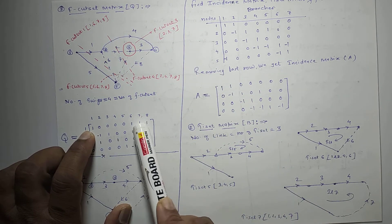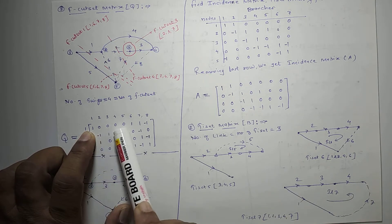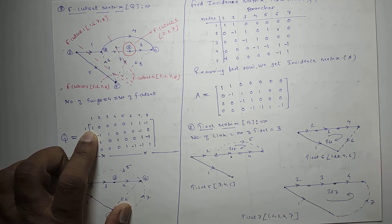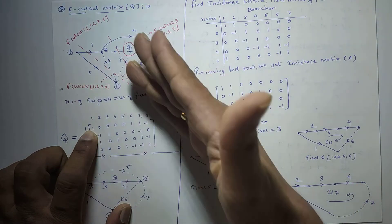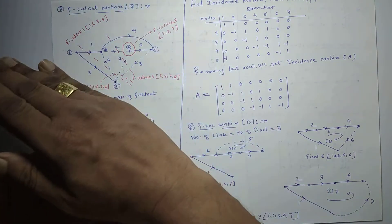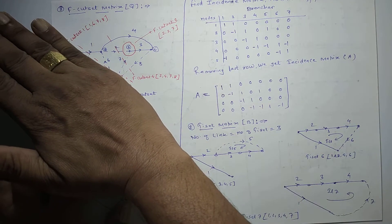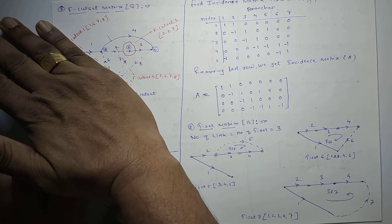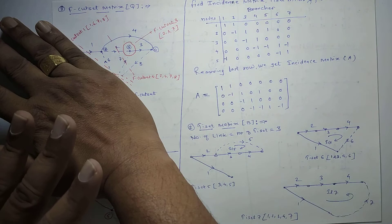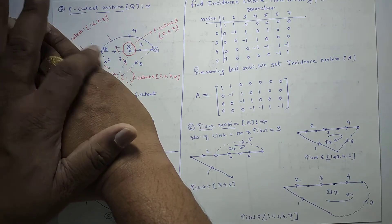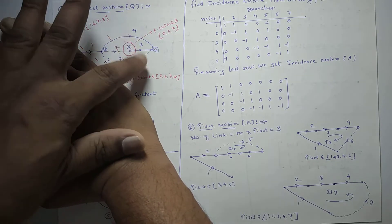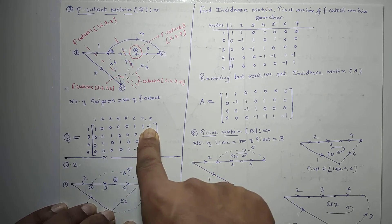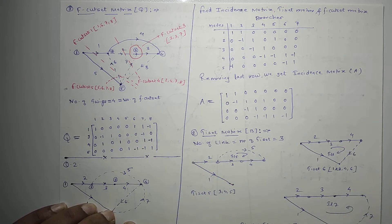Regarding orientation: the twig direction is always the positive direction with respect to any chosen part of the graph. For f cut set 1, looking at one part of the graph, twig 1 is leaving from this part — so it is positive. Branch 6 is also leaving — positive. Branch 7 is leaving — positive. Branch 8 is entering — so it is negative. Therefore in the matrix, branch 8 gets a negative value.